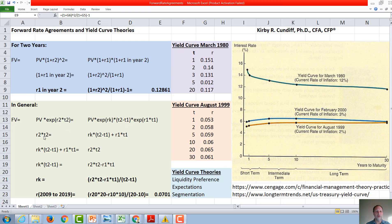For exponents, then we would say r2×t2 has to equal rk×(t2-t1) plus r1×t1. We will rearrange this, take this to the left side, this to the right side, and now we want to solve for rk, so we subtract r1×t1 from both sides, and then we divide by (t2-t1), and we get rk equals (t2×r2-r1×t1)/(t2-t1).